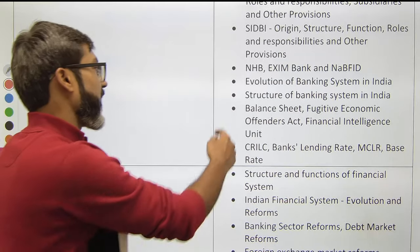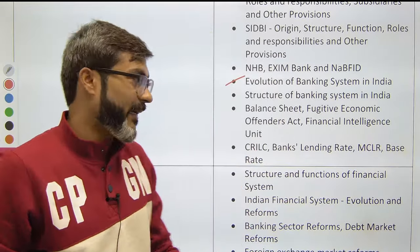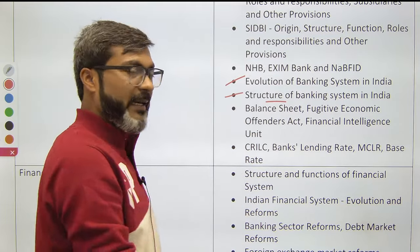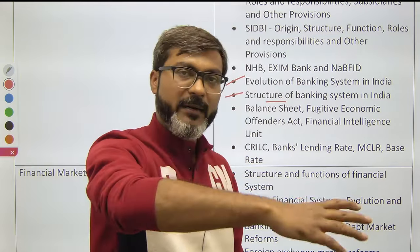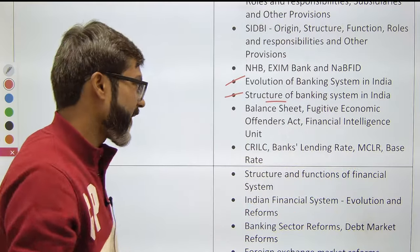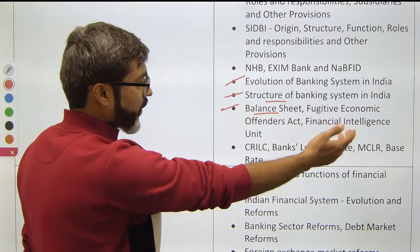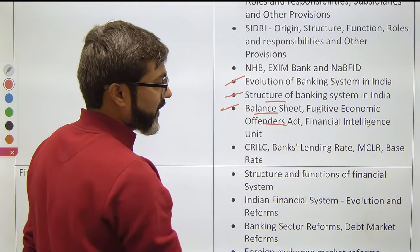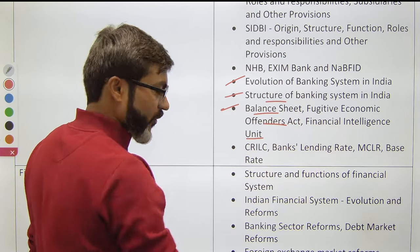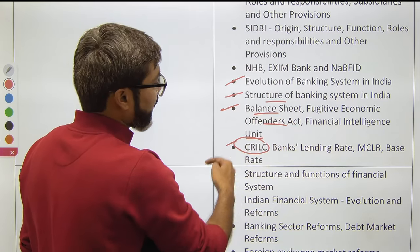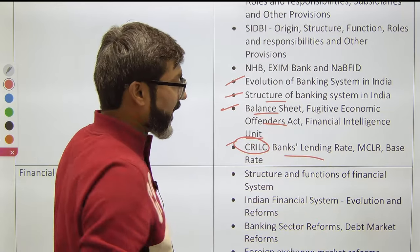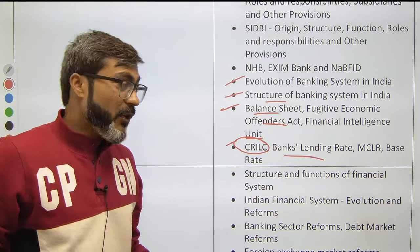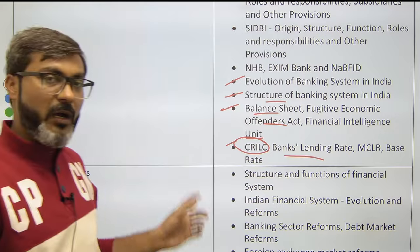Cover the evolution of the banking system in India, the concept of lead bank, arc status, and the structure of the banking system — scheduled commercial banks, regional rural banks, payment banks, small finance banks, etc. Also cover balance sheets, Fugitive Economic Offenders Act, Financial Intelligence Unit, and lending rates: MCLR, base rate, and ILC banks.